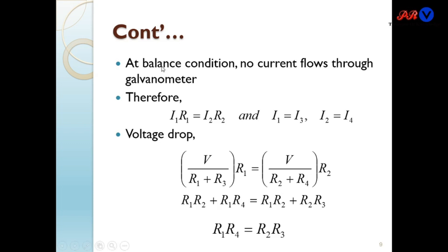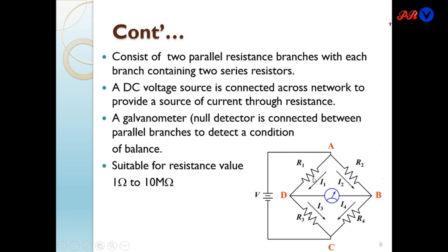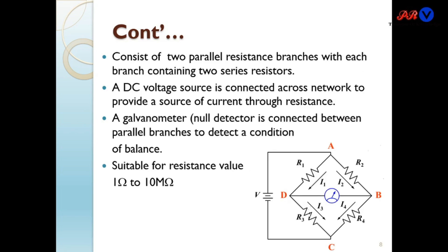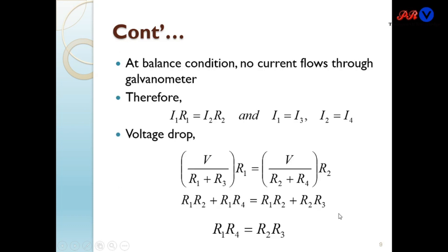We will now derive the mathematical equations for the Wheatstone bridge. At the balanced condition, no current flows through the galvanometer. Therefore, I1·R1 = I2·R2. This implies I1 = I3 and I2 = I4. So all current flows from A to D to C, and similarly from A to B to C, giving us the conditions I1·R1 = I2·R2 and I3·R3 = I4·R4.